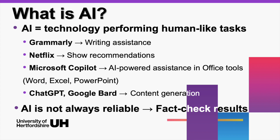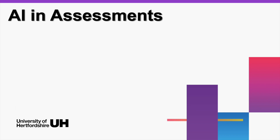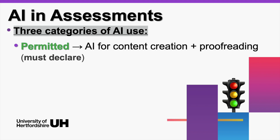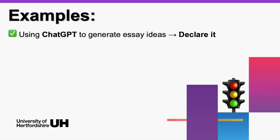AI in assessments — this is where things get serious. You can't just use AI whenever and however you want in assessments. The university has three categories for AI use. Think of them like traffic lights. Permitted — green light. AI is allowed for content creation and proofreading, but you must declare it. For example, you use ChatGPT to help come up with ideas for an essay — great, but don't forget to mention it in your references.